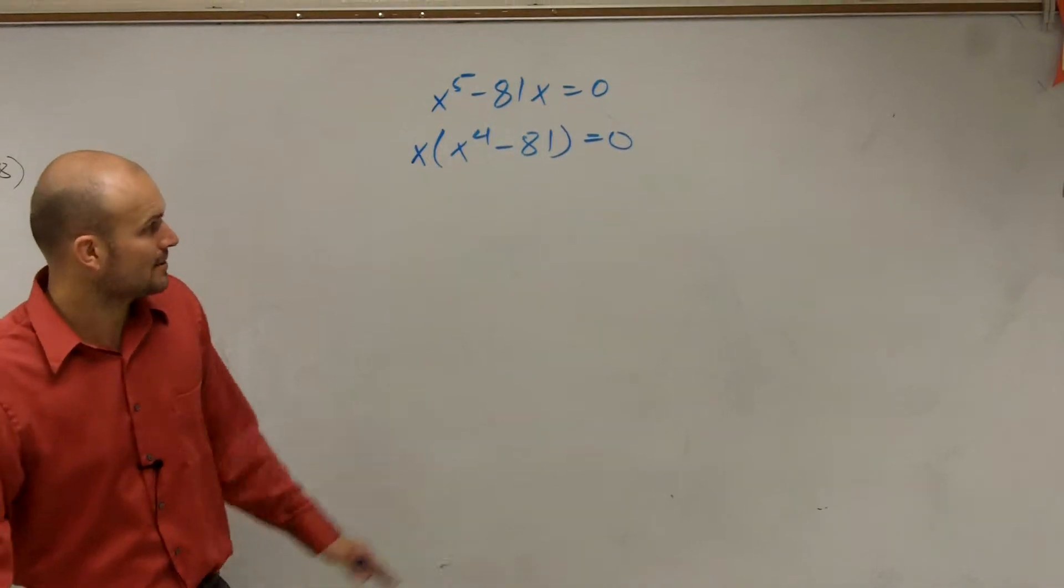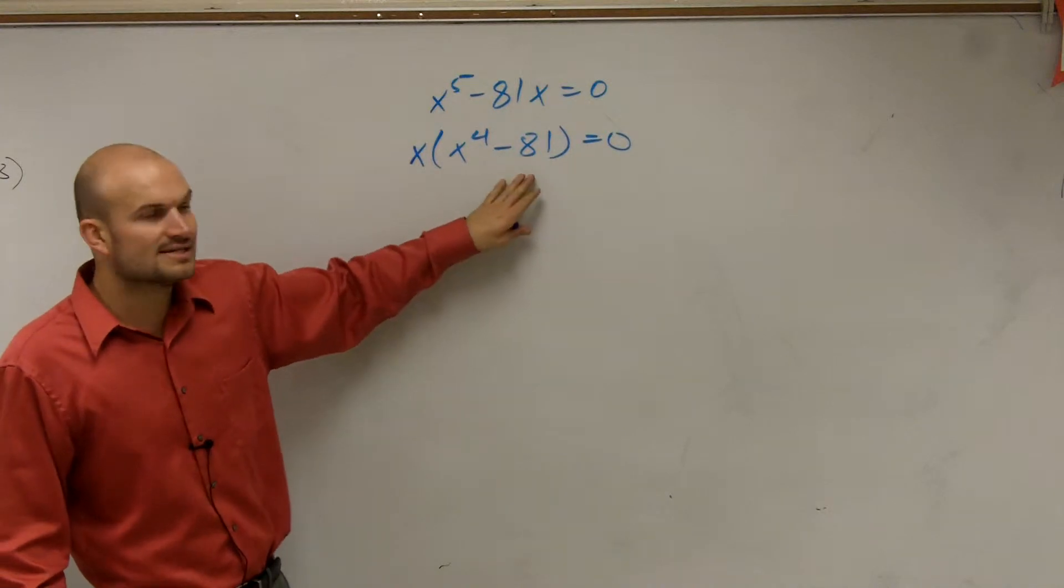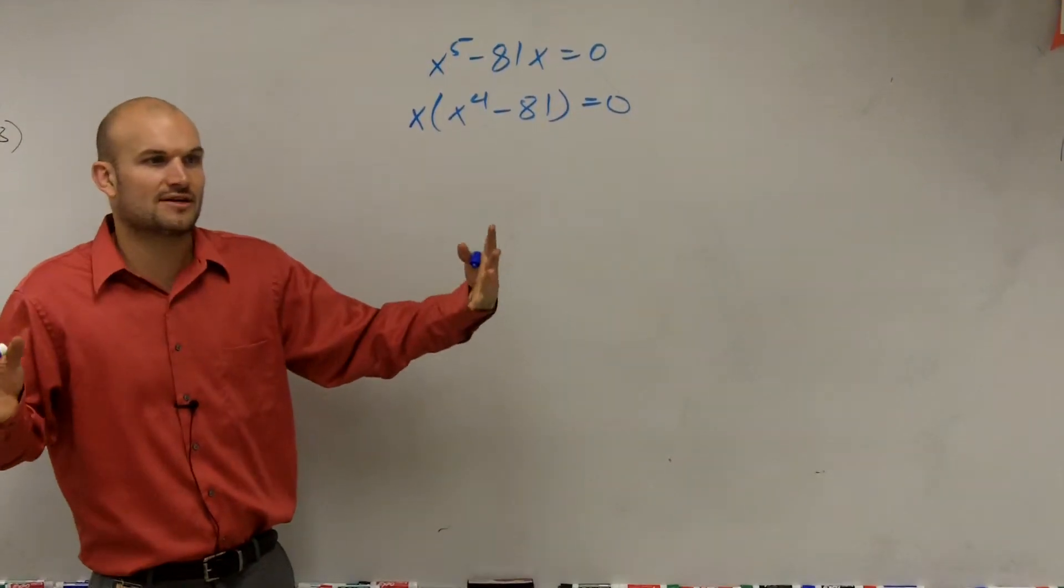I don't know about that one. So what I could do then is x times x to the fourth minus 81. Can I factor this further? Can I break that down and factor it again?